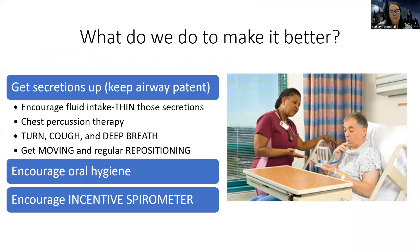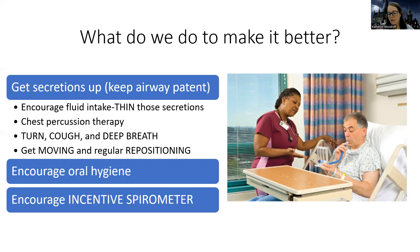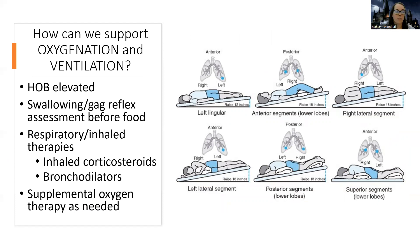As the nurse, I want to get secretions up and keep the airway patent: encourage fluid intake to thin secretions, do chest percussion therapy, and encourage turning, coughing, and deep breathing. Mobilization and movement is super helpful for drainage. Regular repositioning and early mobility are key. Encourage oral hygiene because poor oral hygiene increases the chance of bacteria reaching the lungs. Use incentive spirometer to keep alveoli from collapsing — remember, atelectasis leads to pneumonia.